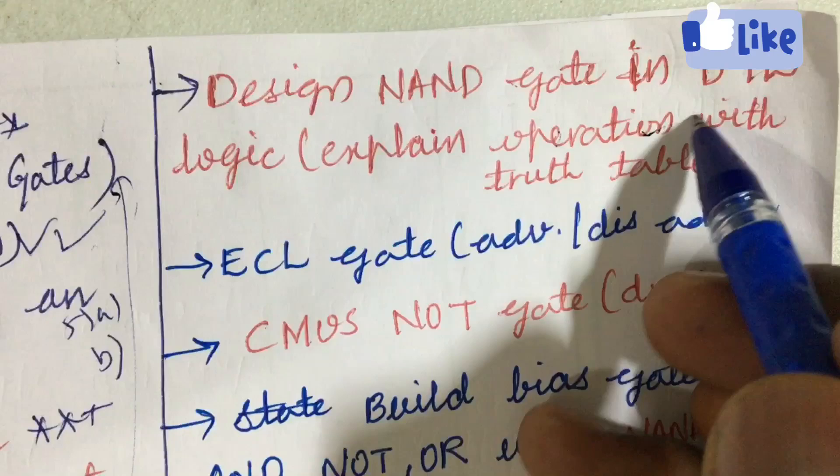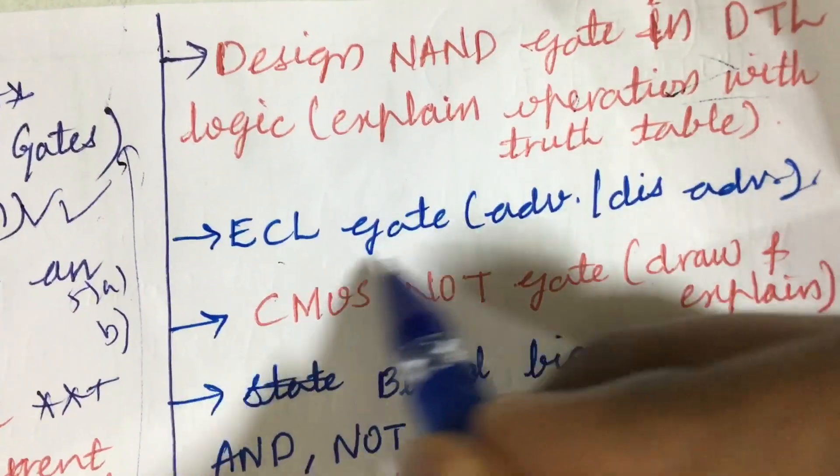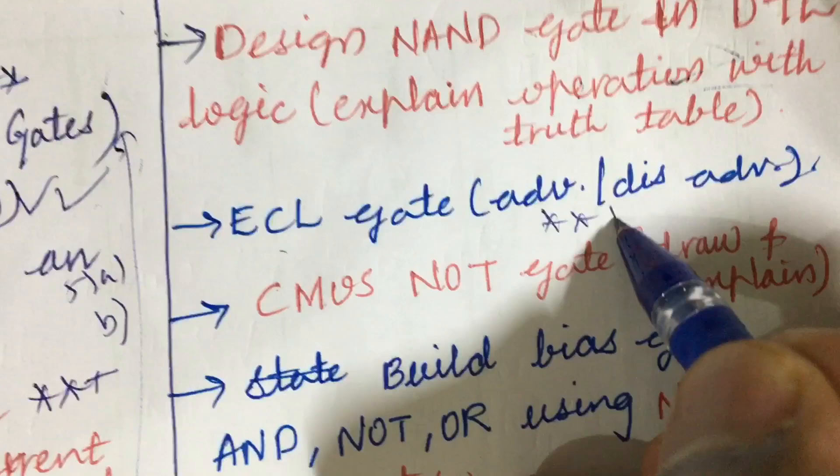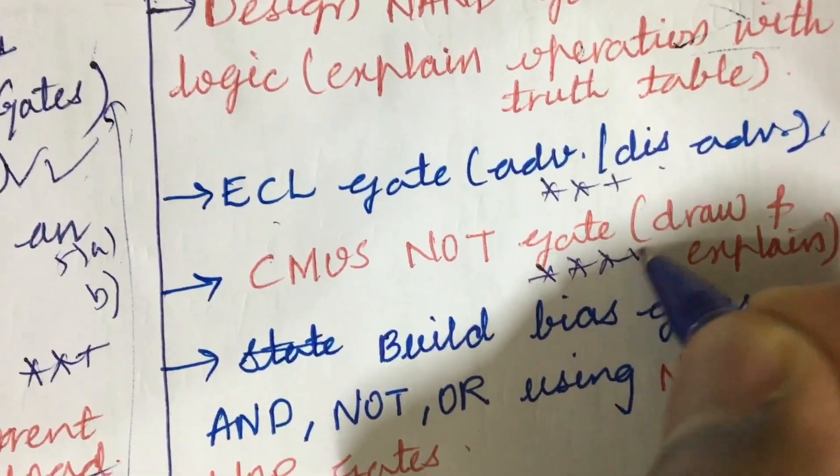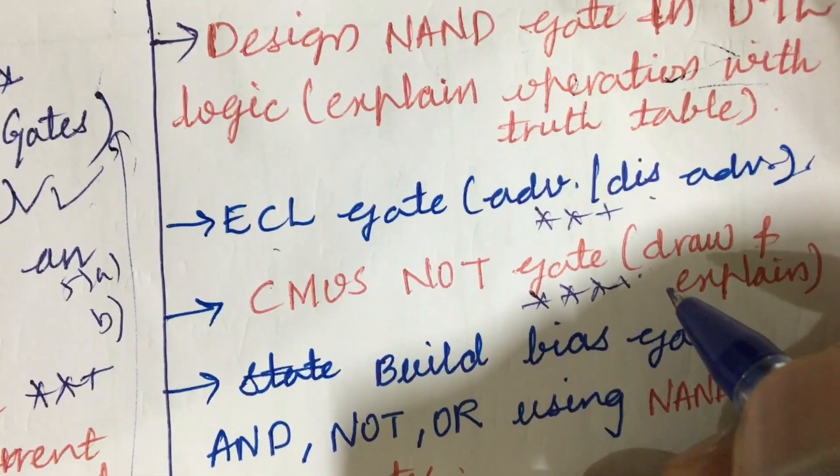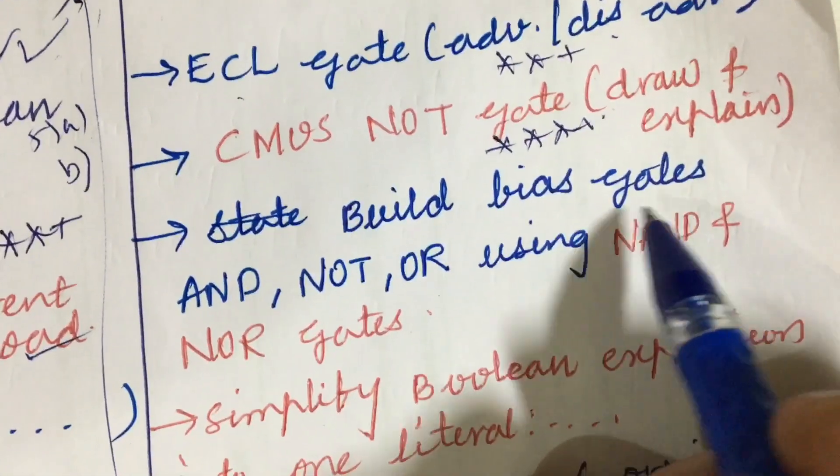Later, the sixth question is all about the design NAND gate in detail, logic, explain operation with truth table, as well as ECL gate advantages and disadvantages, and CMOS NAND gate may be also one of the very important and gunshot questions, dear students. Do not expect direct 15 marks; it is a combination of 7-8 or 10-5 split. Build the bias gates and NOT or using NAND and NOR gate is also one of the very important and asked several times.